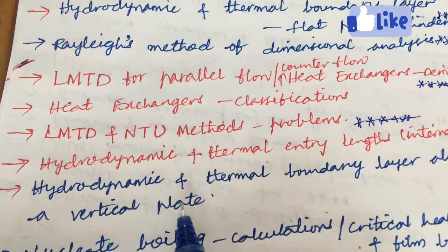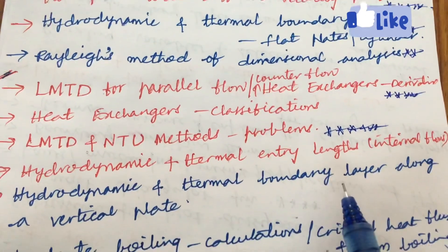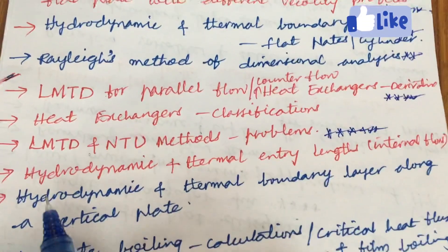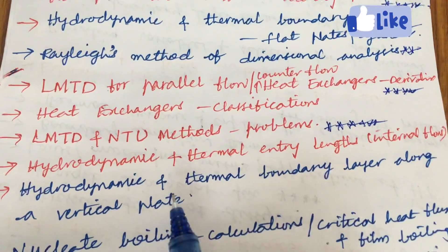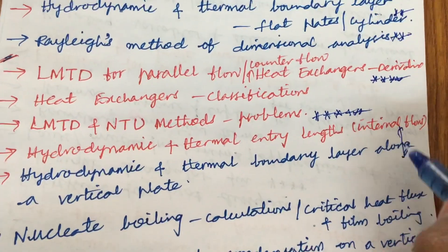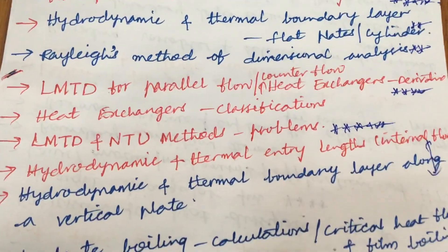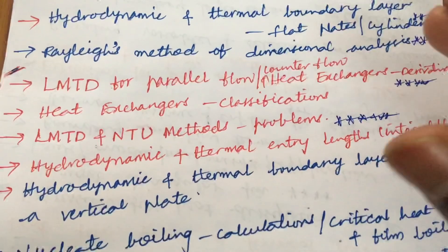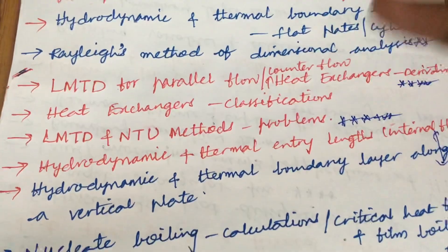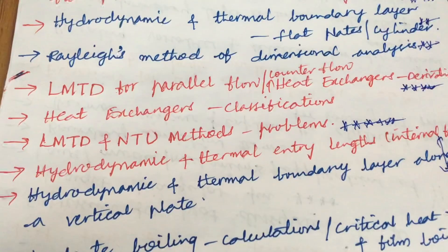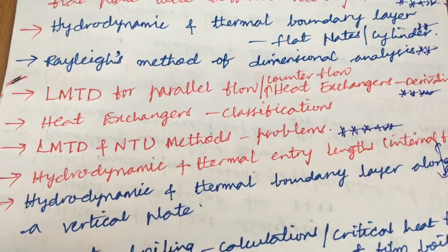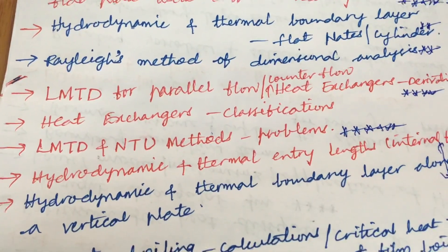Later, the hydrodynamic and thermal entry lengths for an internal flow as well as hydrodynamic and thermal boundary layer along a vertical plate. Out of these two concepts we can expect any one question. Till now I have covered six questions which I have talked till now. From these concepts you may be getting six questions, that is nothing but first, second, and third unit.